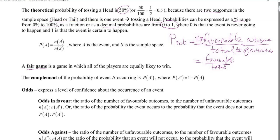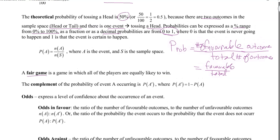The complement of the probability of event A occurring is P(A'), where A-prime is just the notation. The probability of A prime is 1 minus P(A). So P(A) is the probability of the event occurring, and the probability of the event not occurring, P(A'). If you take those two probabilities together — it happens or it doesn't happen — they must add up to 1. For example, if an event's probability is 36 out of 100, its complement is 64 out of 100, adding up to 100 out of 100, which is 100%, or 1 as a decimal.